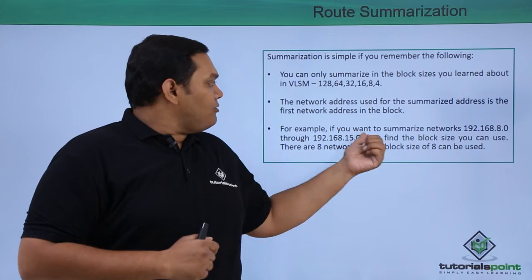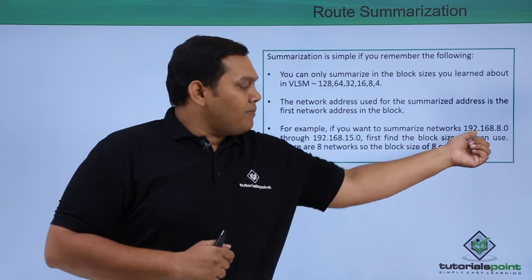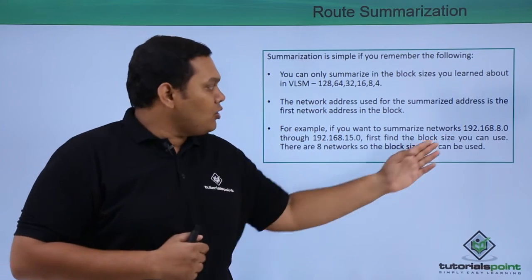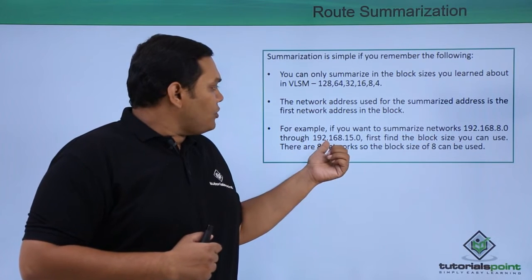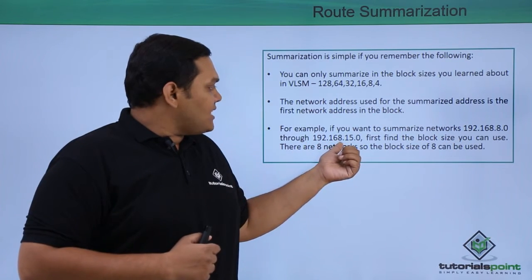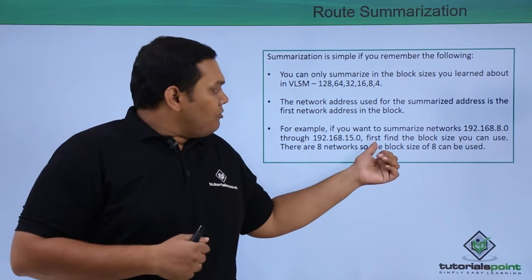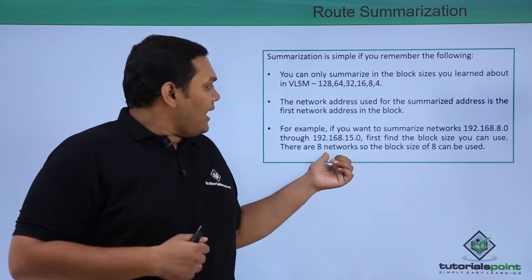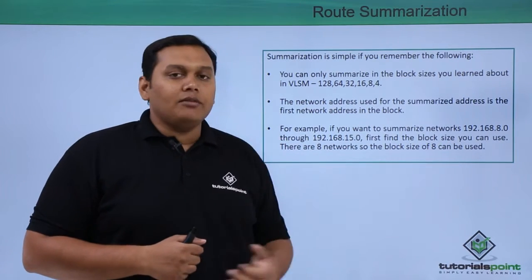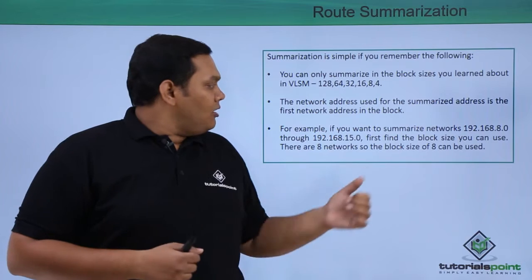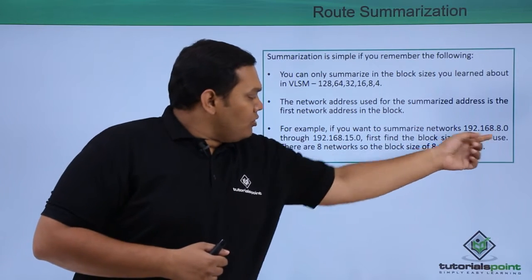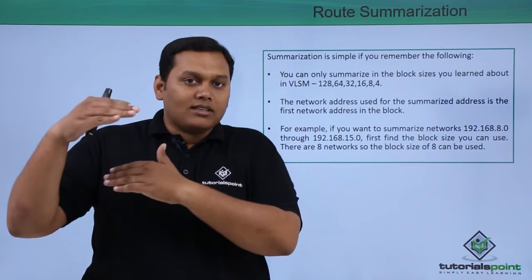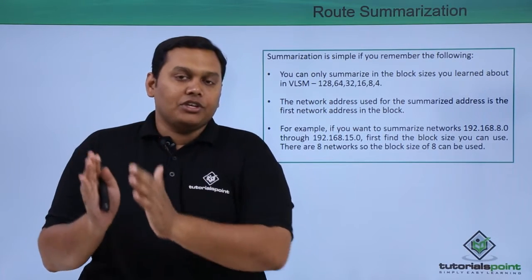For example, if you are summarizing the IP addresses from 192.168.8.0 to 192.168.15.0, to find the block size you use 8 networks. That means from 8.0 to 15.0 you use a block size of 8.